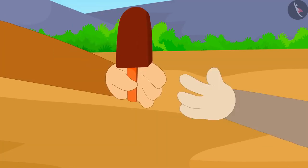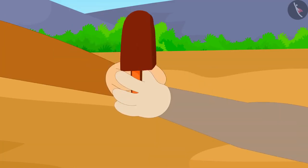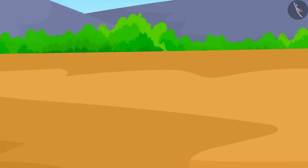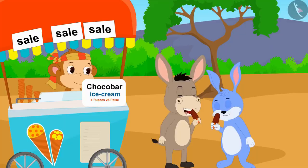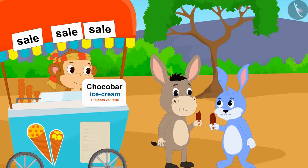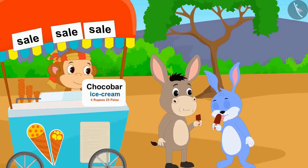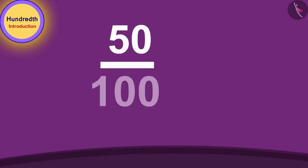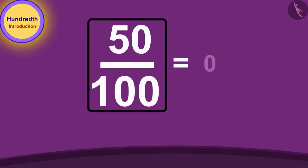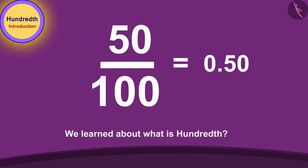Bunny and Bhoala bought one Chocobar ice cream each from Babban and happily returned home eating ice cream. Children, in this video we learned about what is hundredth. In the next video, we will learn more about it through some interesting examples.